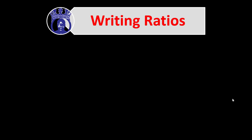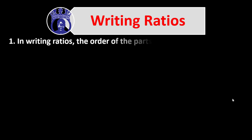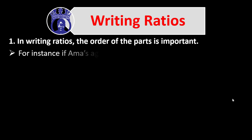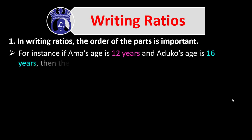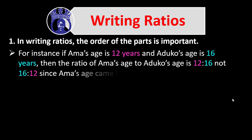When writing ratios, note that the order of the parts is important — ratios are order sensitive. For instance, if Ames' age is 12 years and Adoko's age is 16 years, then the ratio of Ames' age to Adoko's age is 12 to 16, not 16 to 12, since Ames' age came first. Since Ames' age came first, her age must come first in the ratio, and Adoko's age follows.